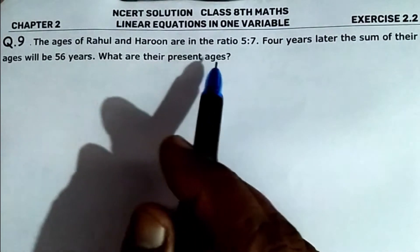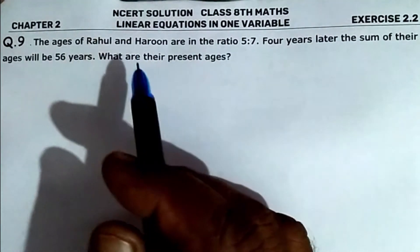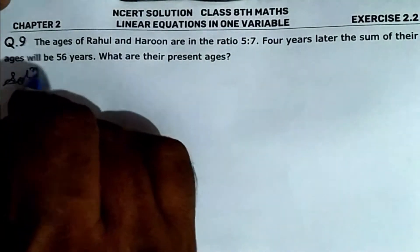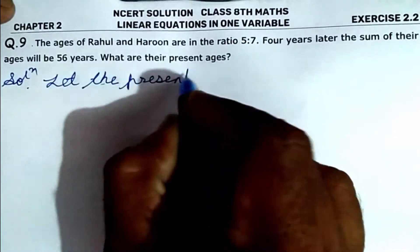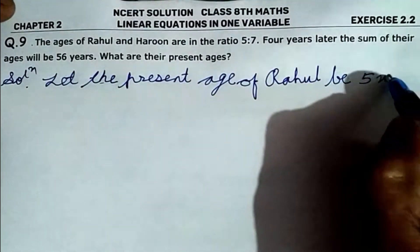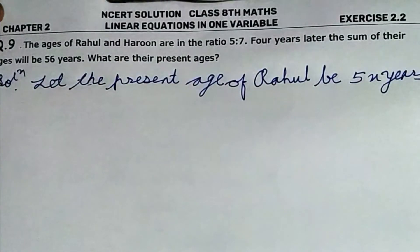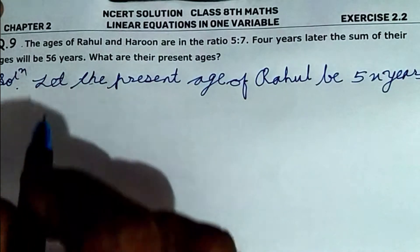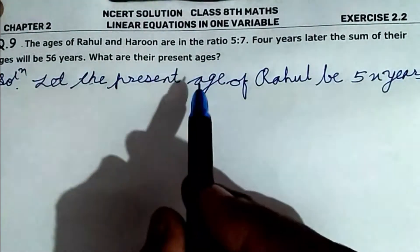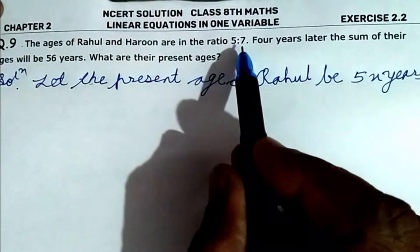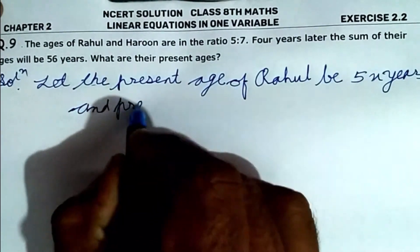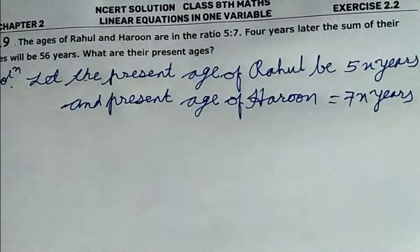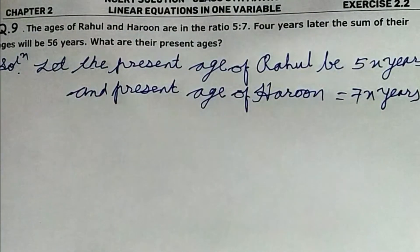Let the present age of Rahul be 5x. Since the ratio is 5 to 7, let the present age of Haroon be 7x.